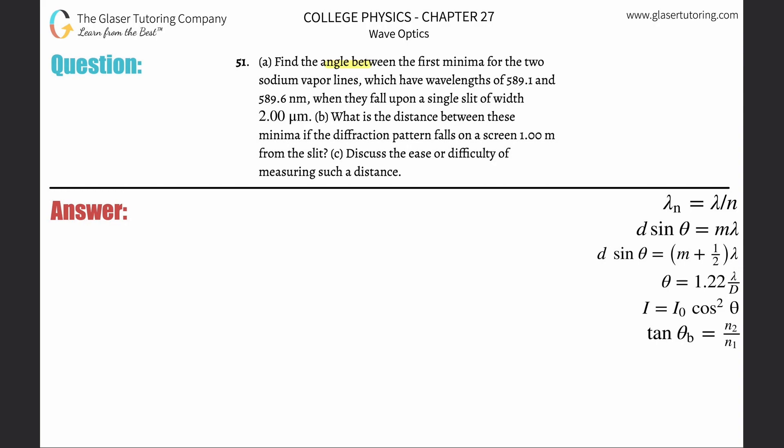Number 51, letter A. Find the angle between the first minima for the two sodium vapor lines, which have wavelengths of 589.1 and 589.6 nanometers, when they fall upon a single slit of width 2 micrometers.